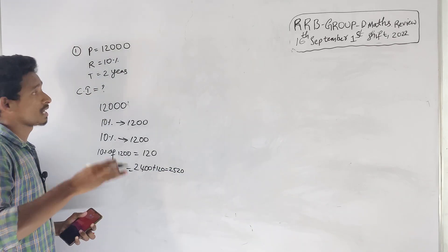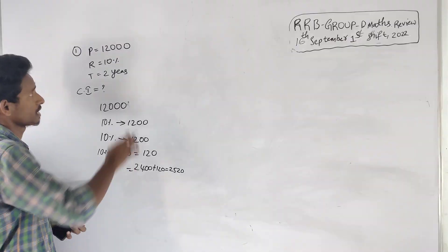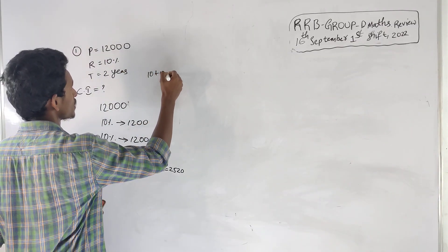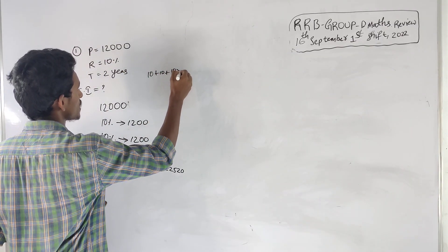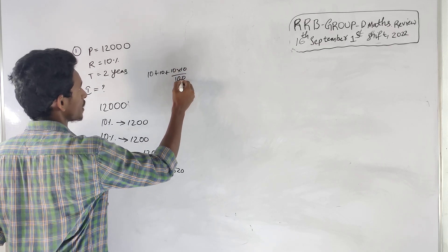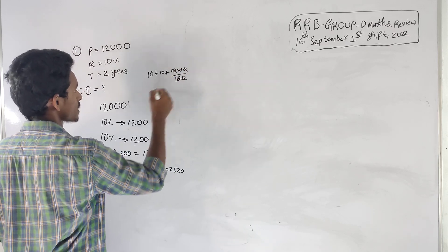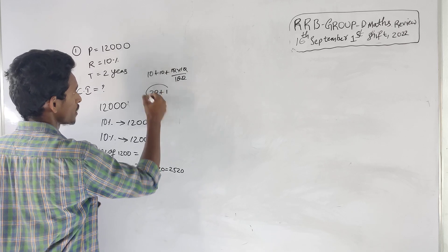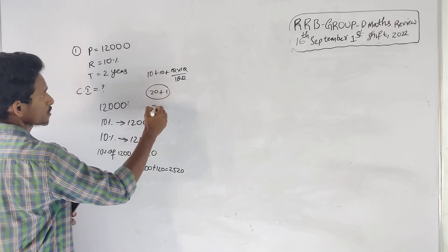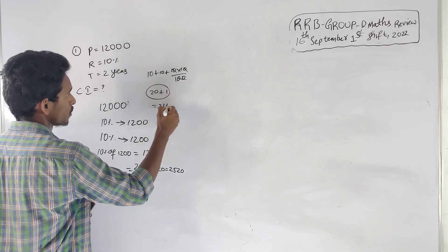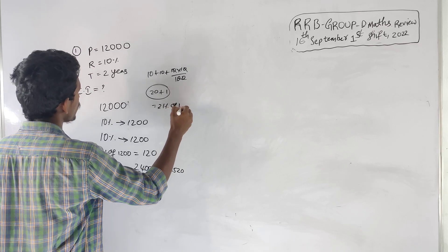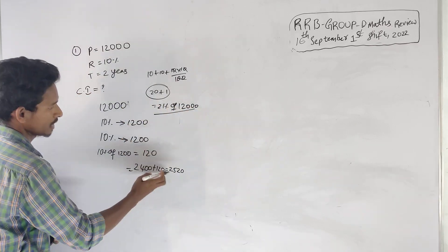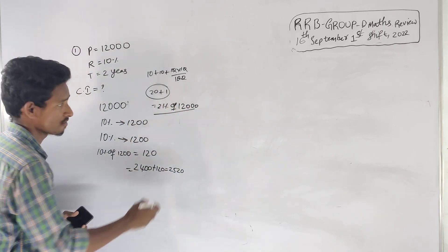This is a shortcut: 10% plus 10% plus 10 into 10 by 100, which gives 10 plus 10 plus 1, equal to 21%. So 21% is the effective compound interest rate. This shortcut gives the same value.